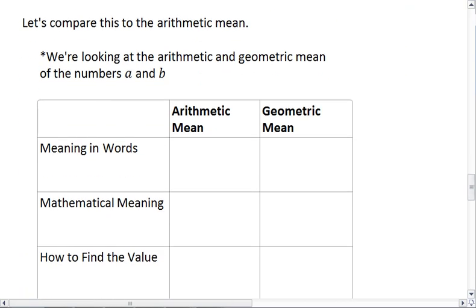To make sense of the geometric mean, let's compare this to the arithmetic mean. We're looking at the arithmetic and the geometric mean of the numbers a and b. The arithmetic mean is an average with regards to addition, and I'll explain what that means.